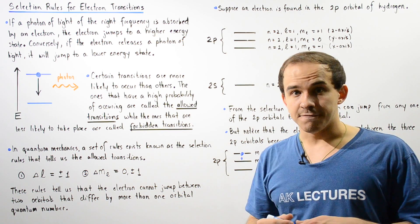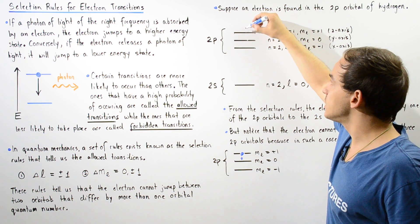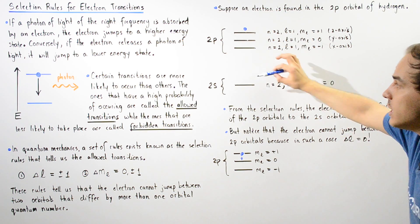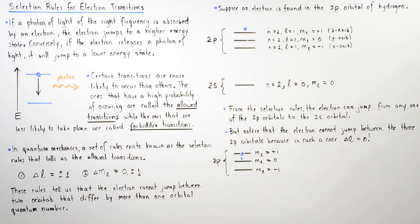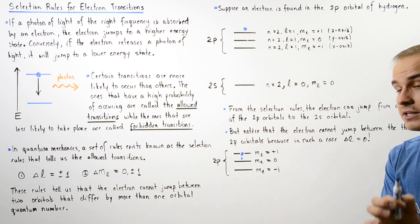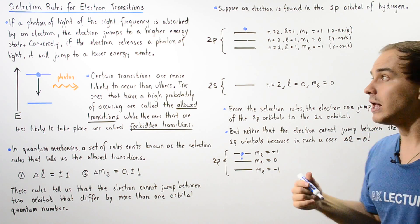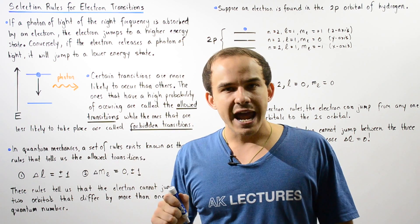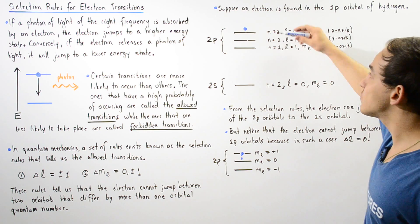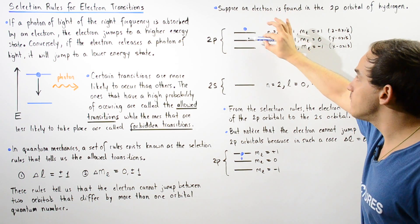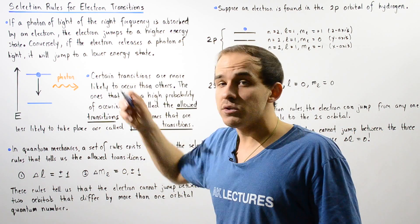The question we want to examine is: suppose our electron is found in the 2pz orbital — can it actually jump from the 2pz orbital to the 2s orbital following these selection rules? From the selection rules, we see that the electron can, in fact, jump from any one of these 2p orbitals to the 2s orbital. The reason is that the change in the orbital quantum number goes from L equals one to L equals zero, which corresponds to a delta L of negative one. So regardless of whether the electron is in the 2py, 2pz, or 2px orbital, it can transition to the 2s orbital and release a photon of light.